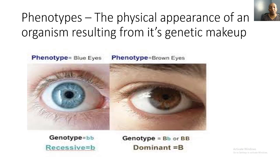Now let's look at phenotypes. Phenotypes are the physical appearance of an organism resulting from its genetic makeup — the genotype codes for the phenotype. For example, blue eyes is a phenotype. The genotype for blue eyes is two lowercase letters — a recessive allele — because blue eyes only show when there are two recessive traits. Brown eyes is another phenotype, and the genotype can be a dominant and recessive trait or two dominant traits: capital B and lowercase b, or capital B and capital B.